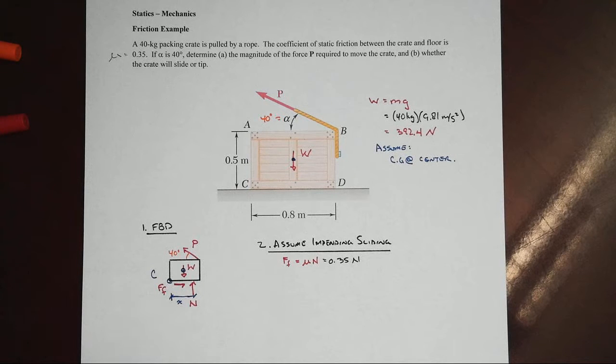In general, of course, F sub f is not equal to mu n. The capacity is, but not the friction force itself. Only at impending sliding is that. Now, once we have that, we can begin to write equilibrium equations.